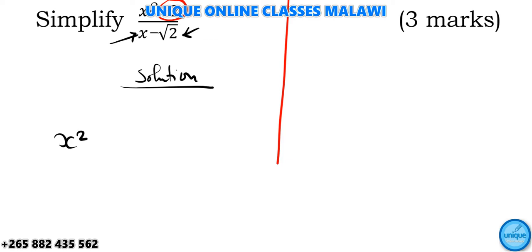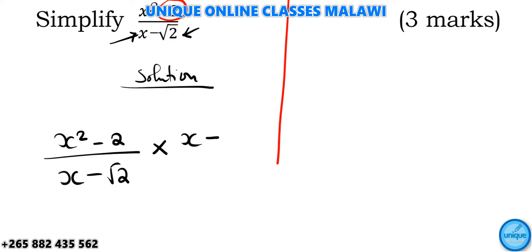We have x squared minus 2, over x minus √2. We multiply by x plus √2, and here we are going to have x plus √2 as well.